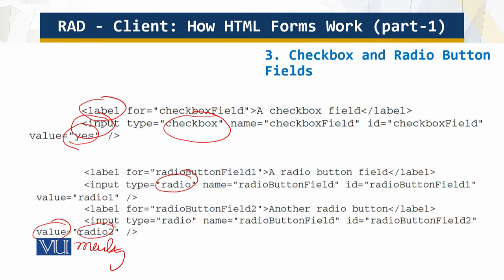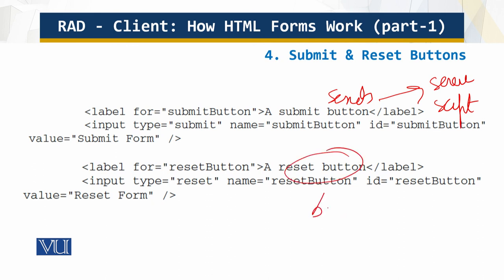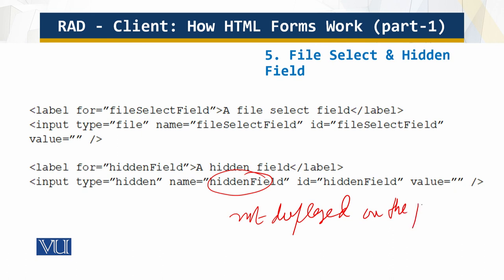Moving on to the submit and reset buttons: the submit button sends the form values to the server script. The reset button resets the form back to its initial values. These are specialized buttons. We also have the select field and the hidden field — the hidden field is not displayed on the page, but it is present in the page code. That is why it is called the hidden field.